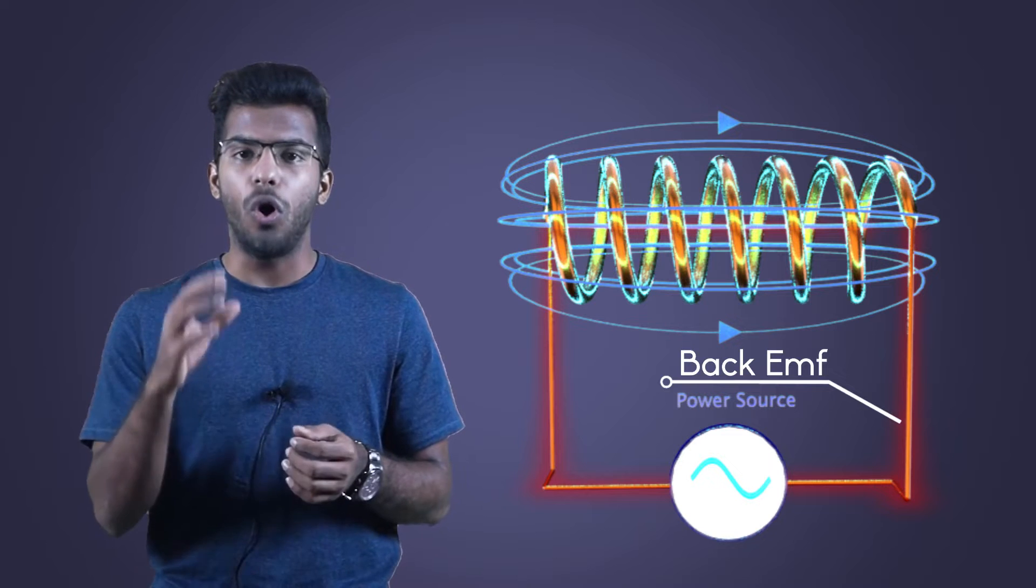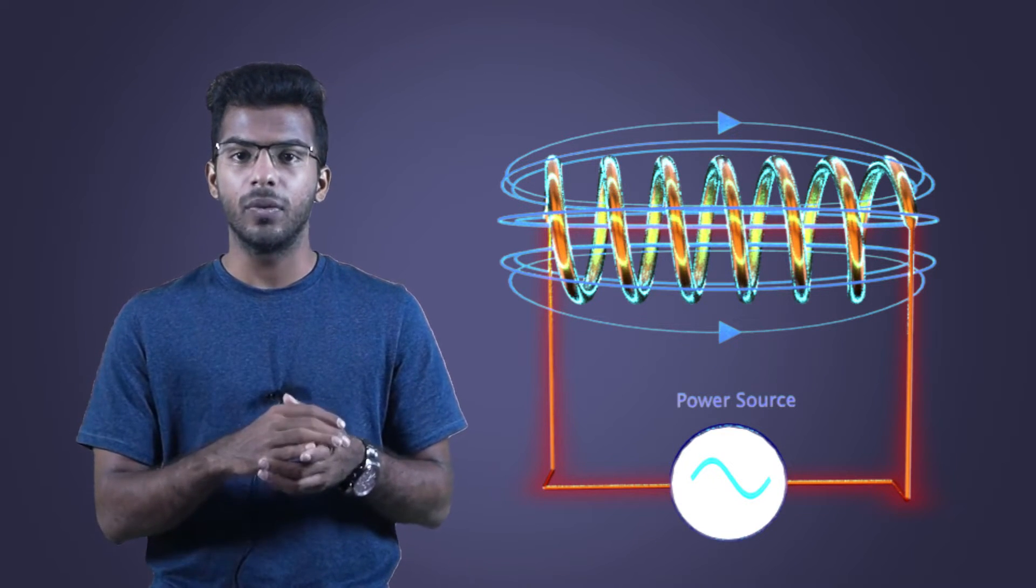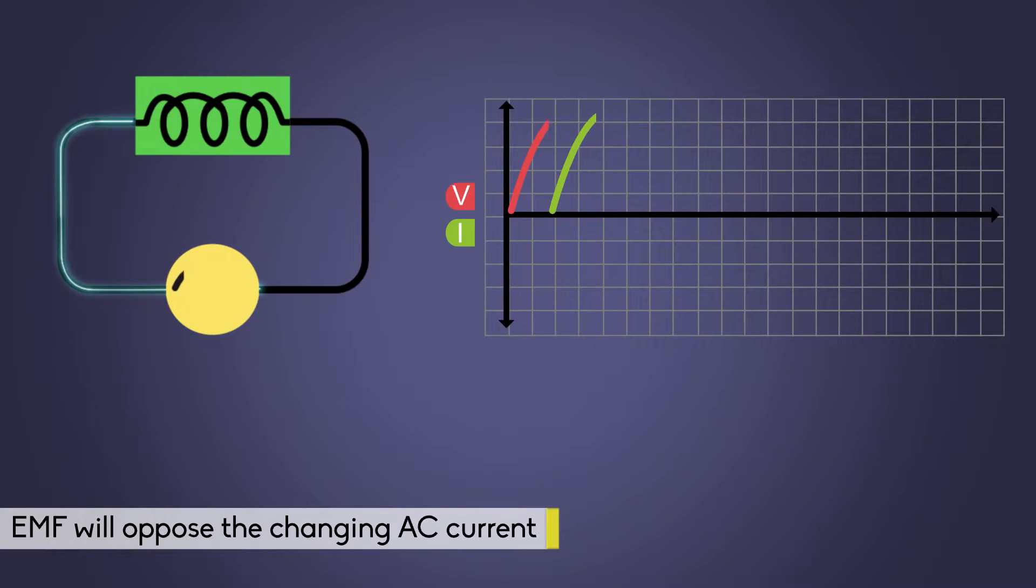The EMF produced or induced opposes the cause producing it according to Lenz law. So the EMF will oppose the changing AC current.